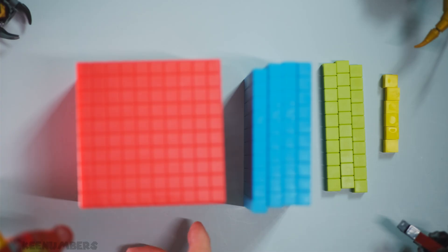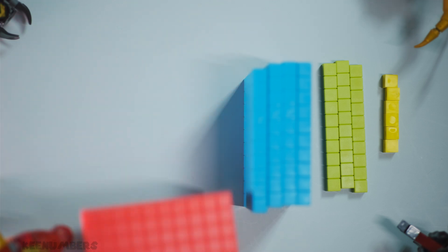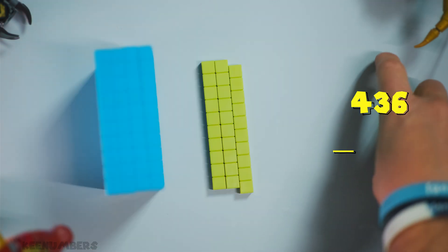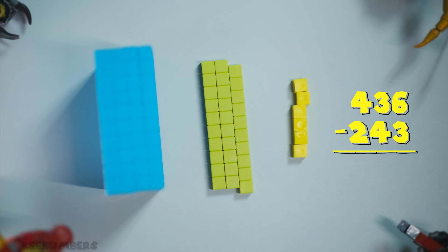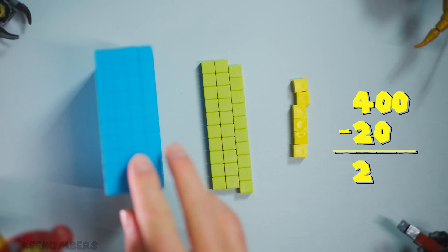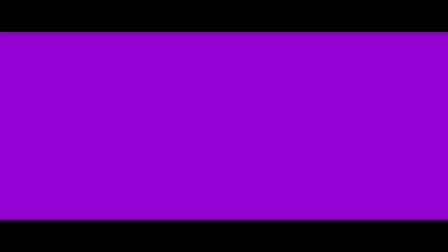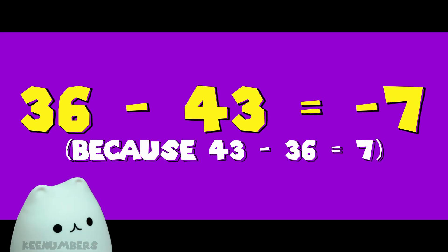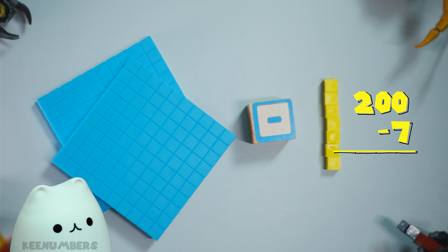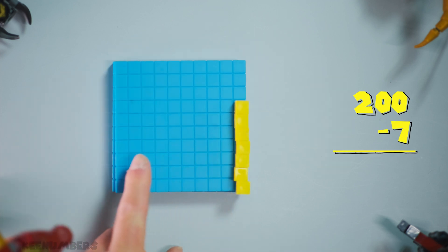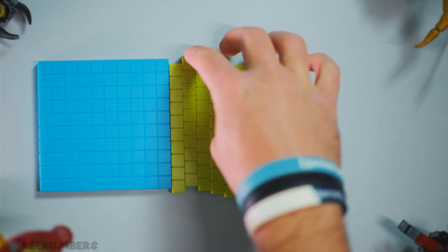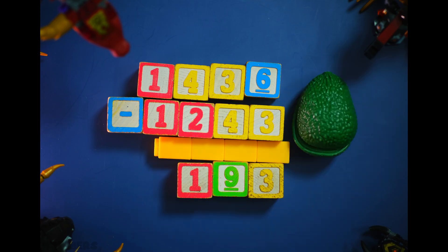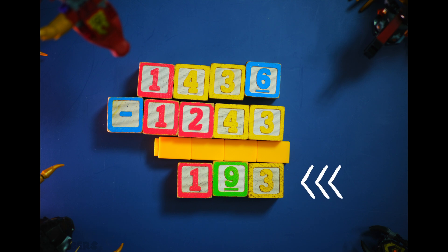First, 1000 minus 1000 is just zero, so we can ignore the thousand. Then all we have left is four hundred and thirty six minus two hundred and forty three. Four hundred minus two hundred is two hundred, and thirty six minus forty three is negative seven. So we have two hundred minus seven. You can go backwards seven spaces from two hundred: 199, 198, 197, 196, 195, 194, 193. That's it, good old one hundred ninety three.